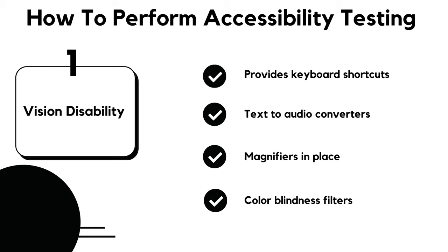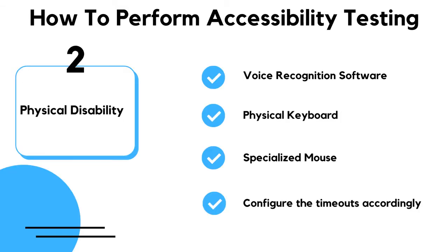How to perform accessibility testing — first, eyesight or vision disability. Ensure the application provides keyboard shortcuts for all operations used by a mouse. We can use text-to-audio converters, magnifiers for low vision abilities, and color blindness filters. Ensure fonts used satisfy the rules of the W3C accessibility checker.